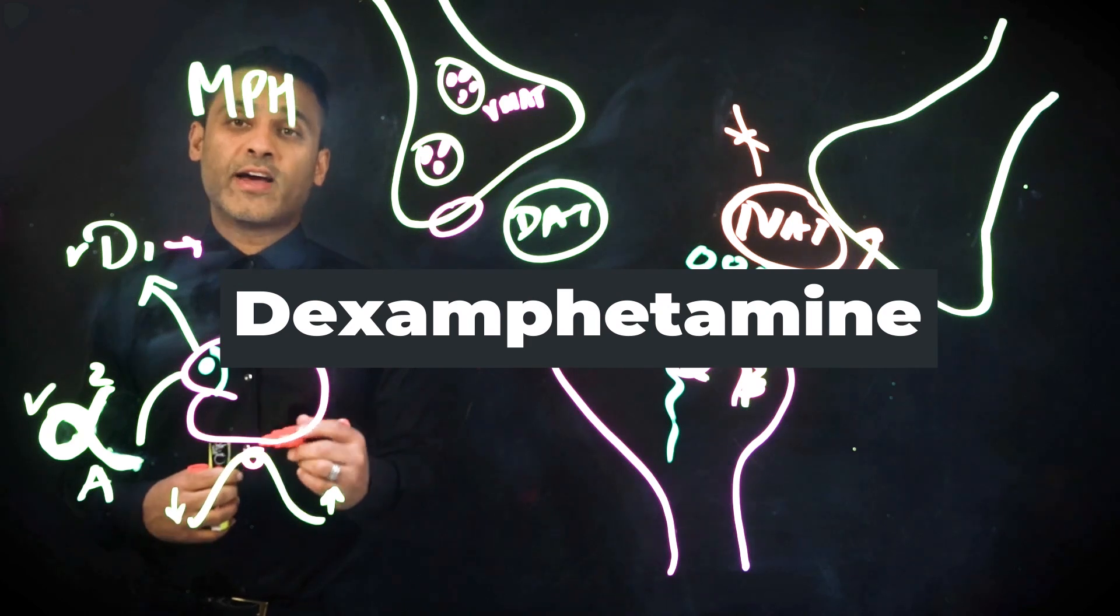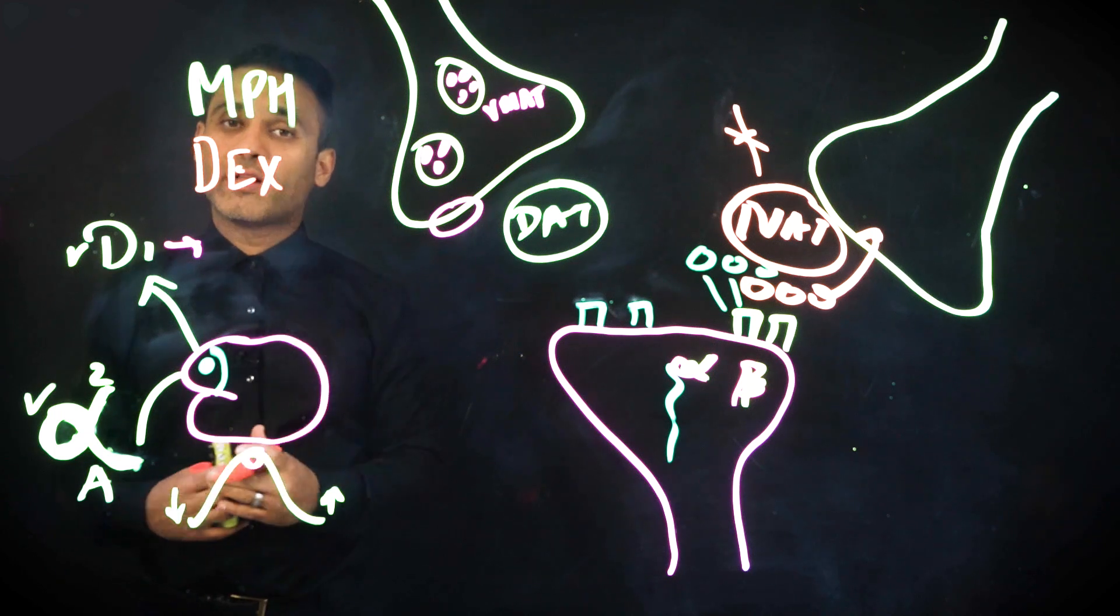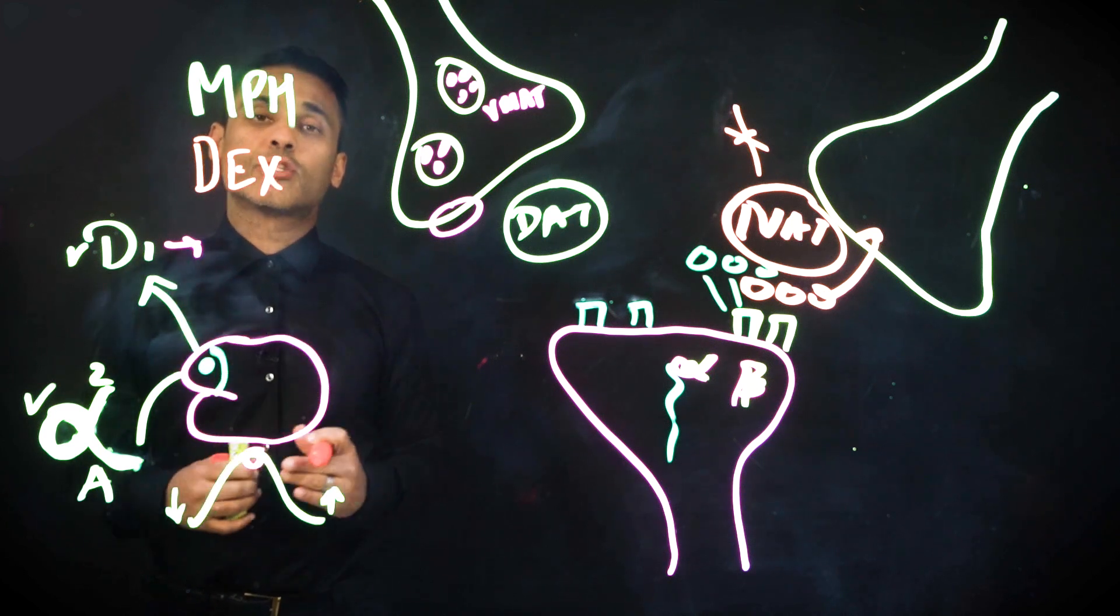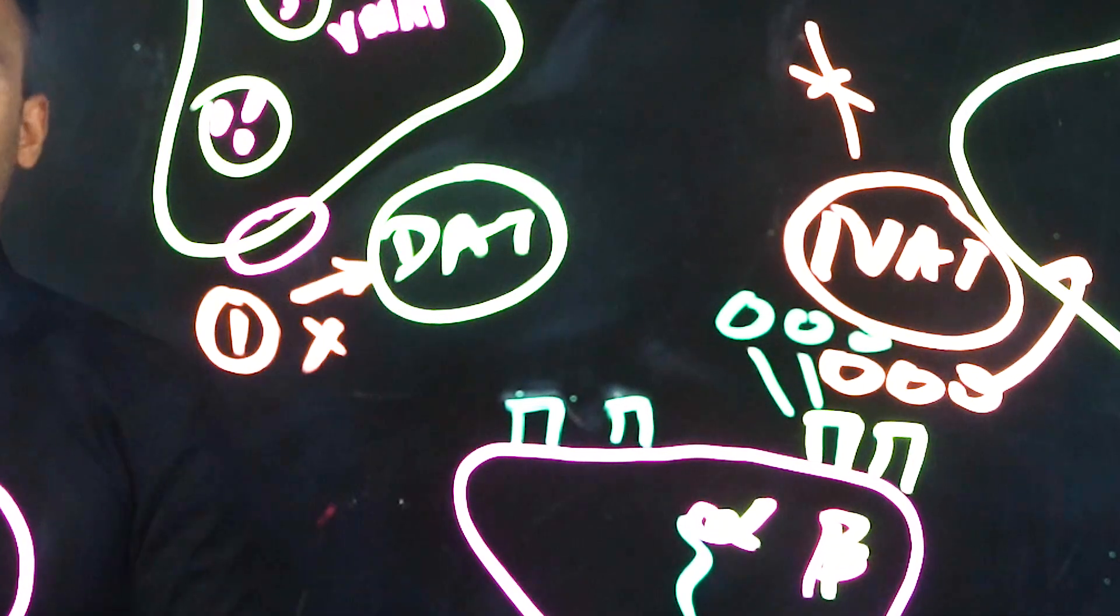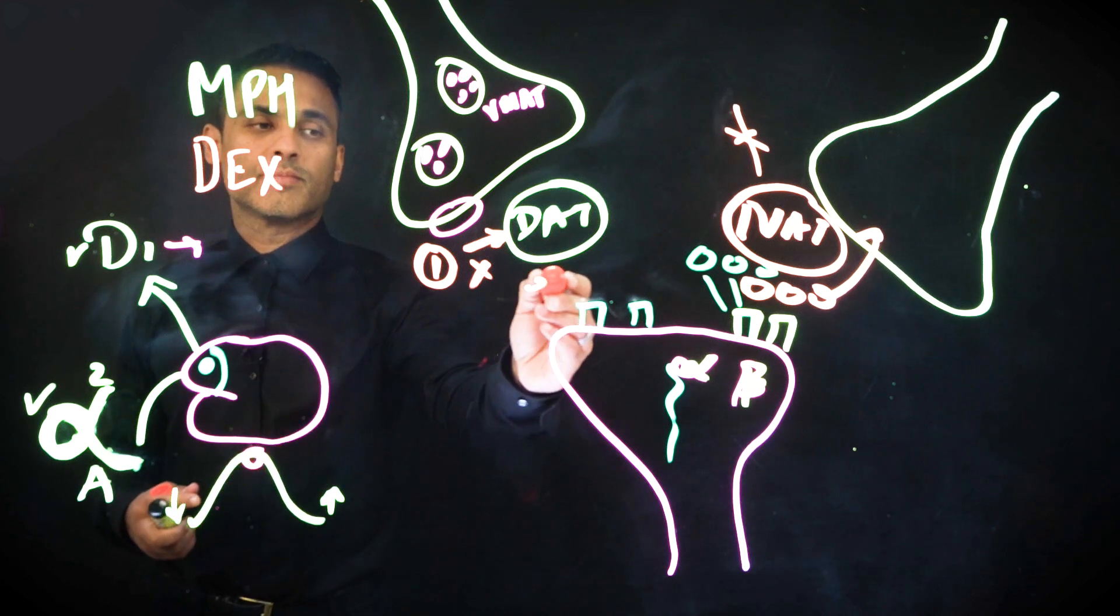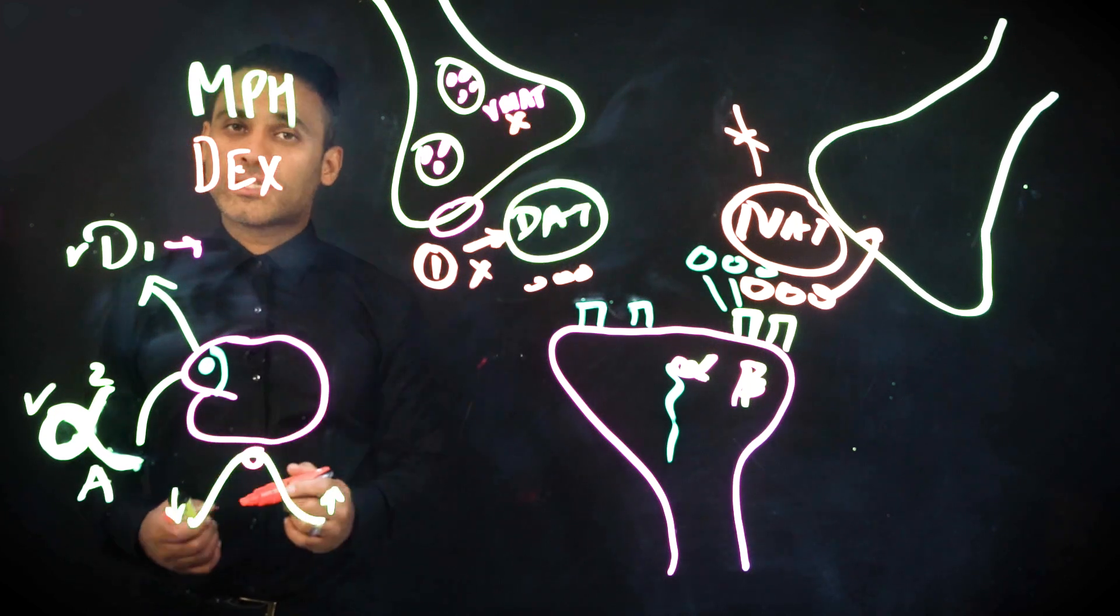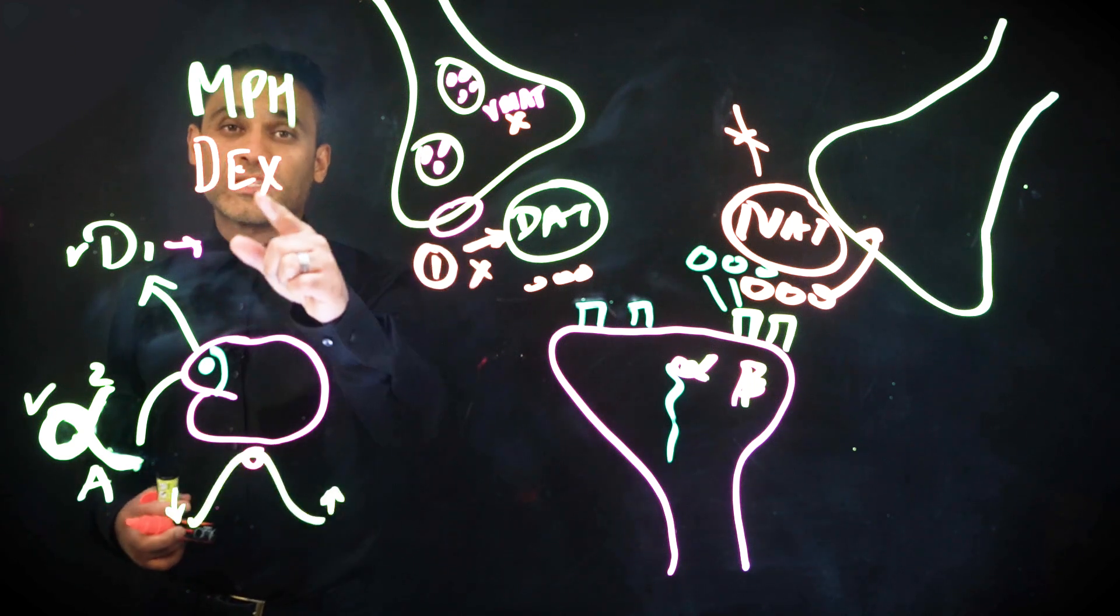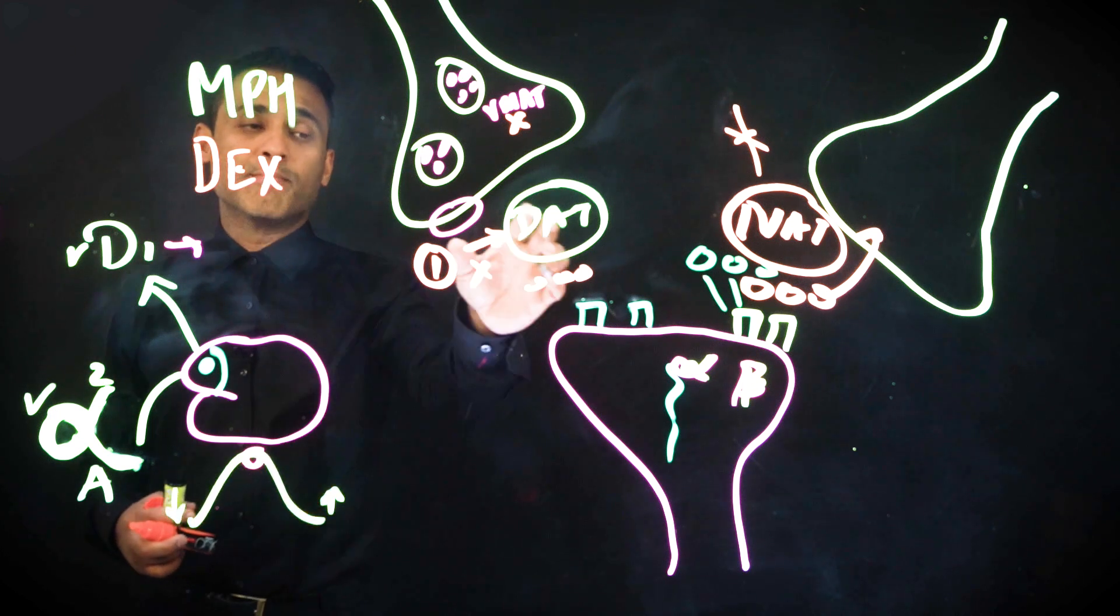Next, let's look at dexamphetamine. Now, dexamphetamine is a much more potent agent compared to methylphenidate. And the reason why that is, is because it has a significant dopaminergic potentiation. And let me take you through that aspect. Firstly, it blocks DAT, just like Ritalin or methylphenidate does. So there's increased dopamine in the synaptic cleft. But it also is an inhibitor of VMAT. By the way, methylphenidate is a non-competitive DAT inhibitor. Dexamphetamine is a competitive DAT inhibitor. So you can see it has a greater effect in blocking DAT as well.